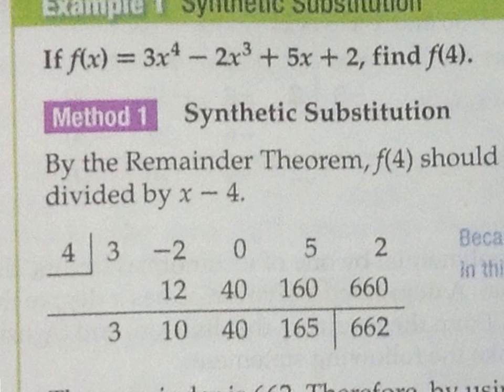Then they put the line and as you go 4 times 3, you get 12. Negative 12 plus 2 is 10. 4 times 10 is 40. 0 plus 40 is 40. 4 times 40 is 160. 5 plus 160 is 165. Everybody knows that 4 times 165 is 660. And then 2 plus 660 is 662. So this is the output. So the actual answer to f of 4 is 662.